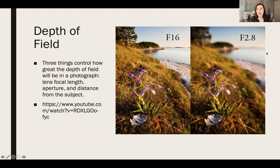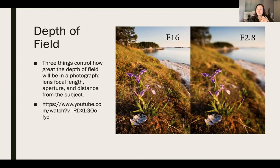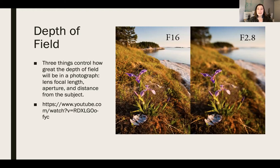Remember that aperture numbers are counterintuitive: the smaller the number, the wider that opening is. The wider the aperture is open, the more shallow the depth of field. The smaller the aperture, the deeper the depth of field. Three things control the depth of field in a photograph: the focal length, the aperture, and the distance from the subject. This next step will make you very intentionally aware of how close or far you are from your subject and how you manipulate focus.